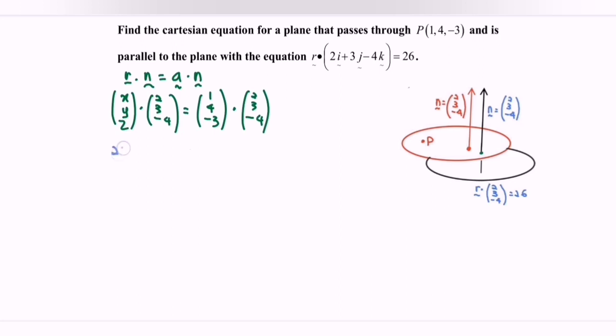So if we dot the situation we will have 2x + 3y - 4z equals 2 plus 12 plus 12. So finally, 2x + 3y - 4z equals 24 plus 2, we have 26. So that is the Cartesian equation of the plane which is red in color.